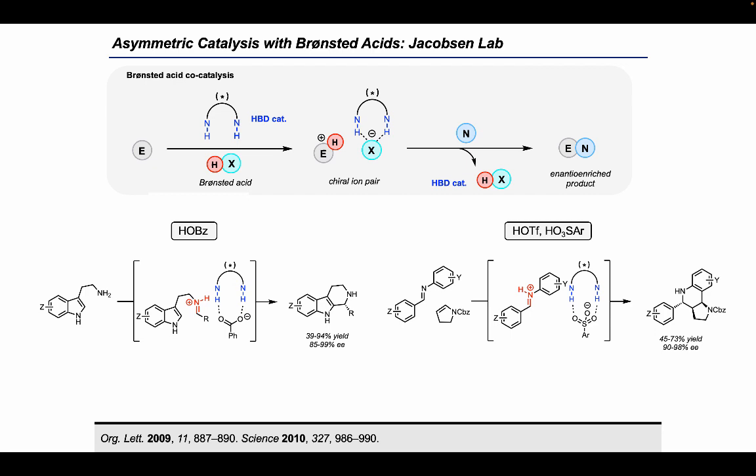In this type of scheme, you can imagine a very similar means to achieve enantioselectivity, again through that critical chiral ion paired intermediate. But now, the difference is that the chiral anion comes from the hydrogen bond donor recognizing the anion. In principle, as long as the conjugate base of a Brønsted acid can be recognized through hydrogen bonding, reactions that are catalyzed by these acids can be rendered enantioselective.